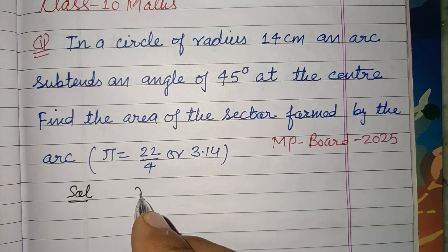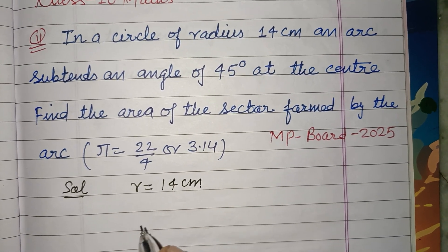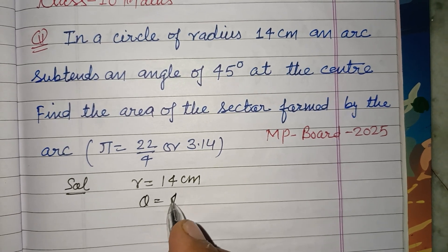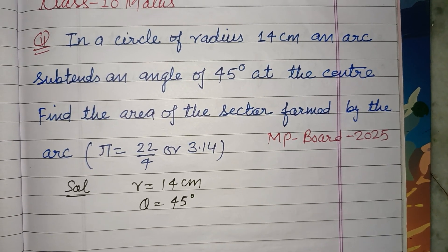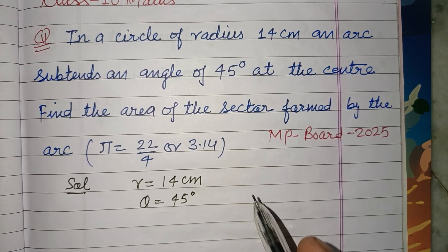So students, here radius is given to us as 14 cm and angle theta is 45 at the center. Find the area of the sector.